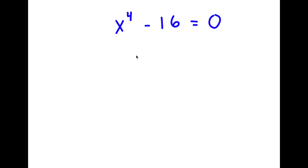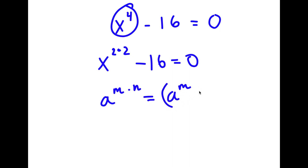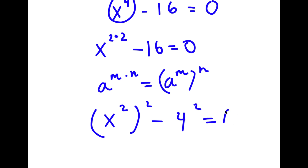In this problem, I have x to the power of 4 minus 16 is equal to 0. I'm going to write x to the power of 4 as x to the power of 2 times 2. Using the rule a to the power of m times n equals a to the power of m to the power of n, x to the power of 2 times 2 equals (x squared) to the power of 2. So now I have (x squared) squared minus 16, which is 4 squared, equals 0.